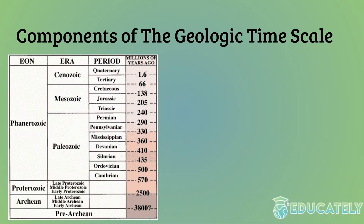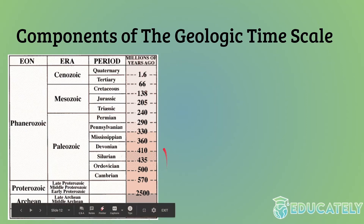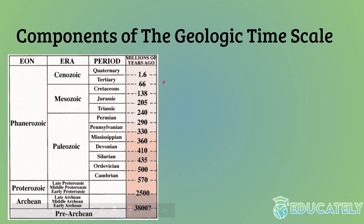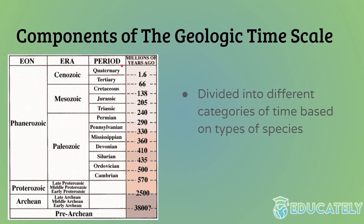The components of the geologic time scale: this is an example of one. You can see the years on the right — these were not part of the original scale, and were added once they knew how to properly date fossils using radioactive dating. These are just the eons, eras, and periods — we'll get into that.